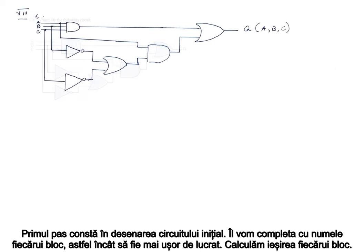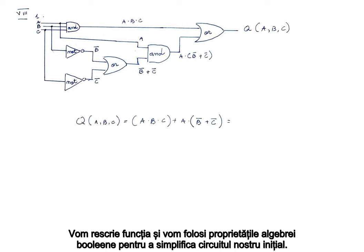The first step is to draw the initial circuit. We will complete it with the names of each block so it is easier to work with. We complete the output of each block, then rewrite our function and use the Boolean algebra properties to simplify our initial circuit.